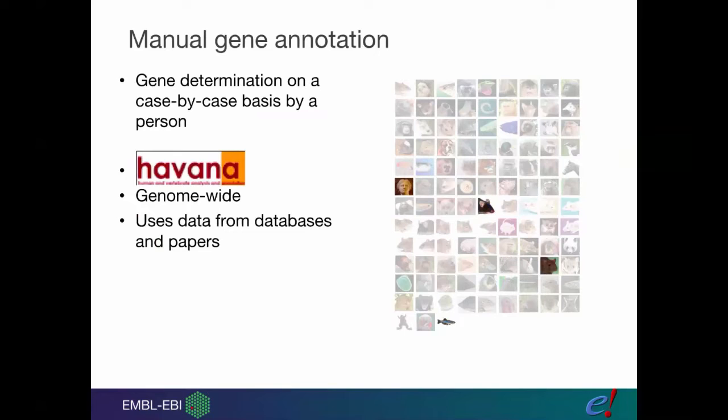Manual annotation is very, very different. It is a lot slower because it's so involved. In this case we have real people rather than computers. They will sit and look at genes, using data from databases and papers, examining each gene one by one. A gene can be about half a day's work or more, depending on what's involved. For this reason we only do it for a much smaller number of species.